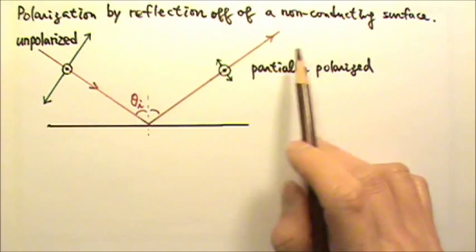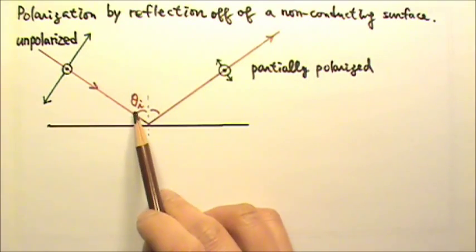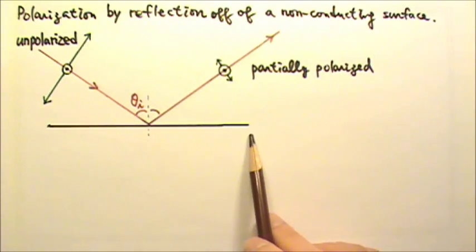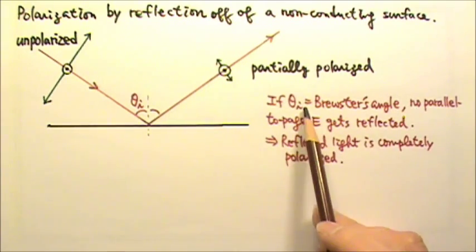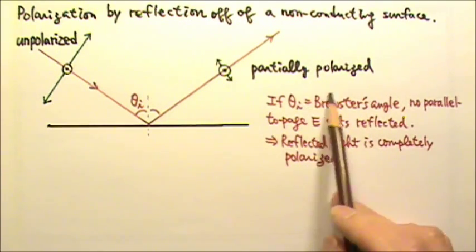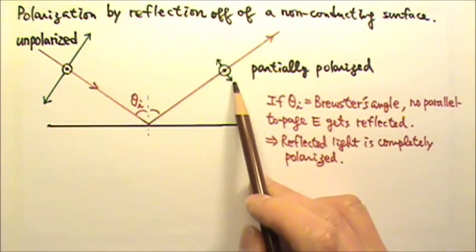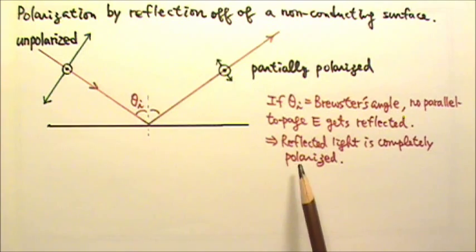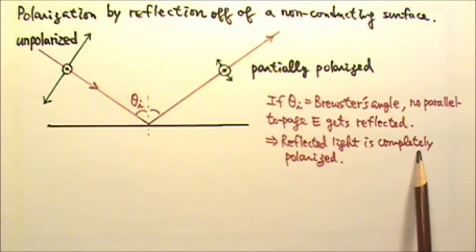The extent of this polarization depends on the incident angle and the material of the surface. At a special angle called Brewster's angle, this parallel to the page component does not get reflected at all, which means the reflected light is completely polarized.